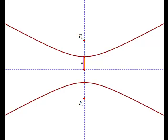Now let's call the distance from the center to the endpoint of the major axis, A. And our focal distance, the distance from the center to the focus, C.